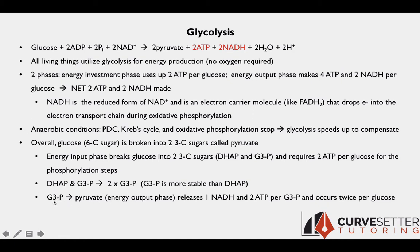For each glyceraldehyde-3-phosphate, which is a three-carbon sugar, we get one pyruvate — pyruvate is also a three-carbon sugar. Because we got two of these per glucose, that makes sense as to why we get two pyruvates per glucose. During this phase, each three-carbon sugar is going to release one NADH and two ATP.